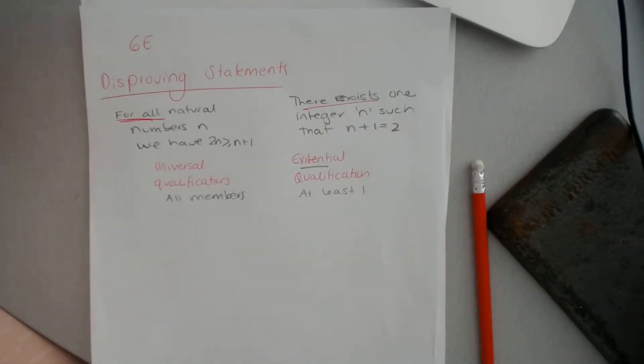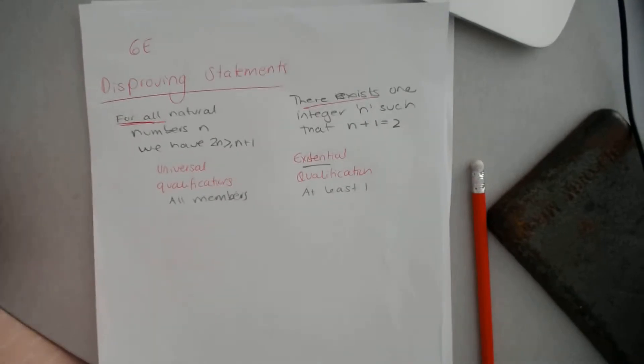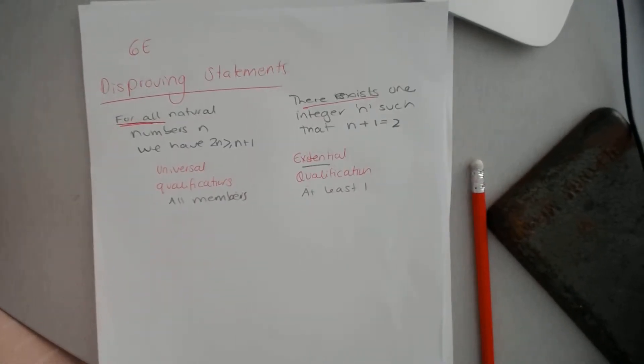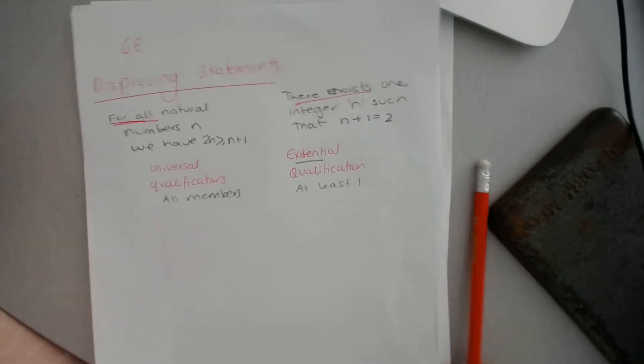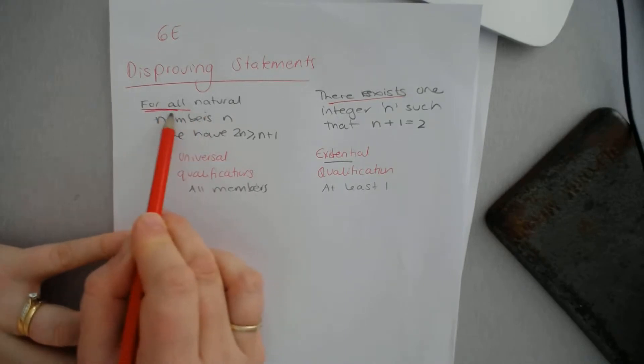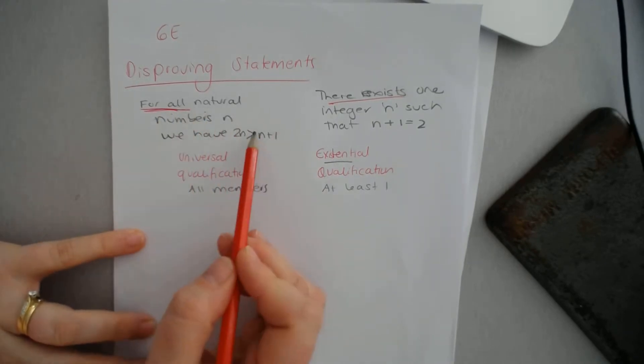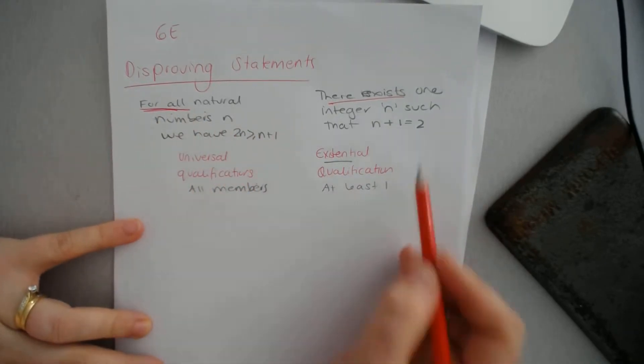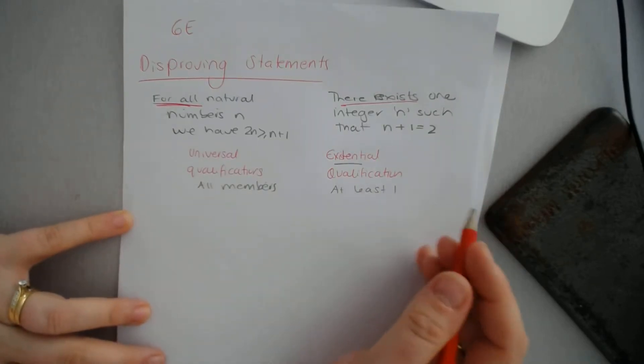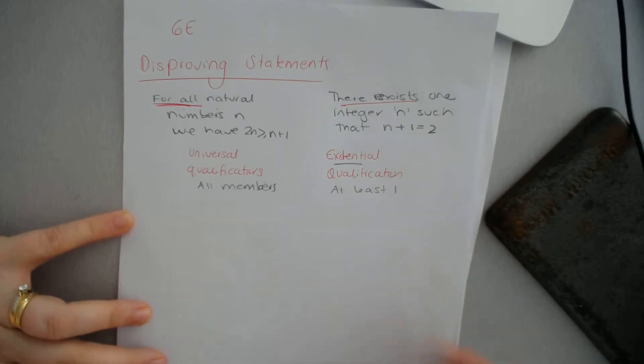This part in the chapter is about disproving statements. We can disprove something by simply showing there is one case where it doesn't work. However, in the existential qualifications, what we need to look at is maybe a proof by contradiction or contraposition, some of the things that you've done.